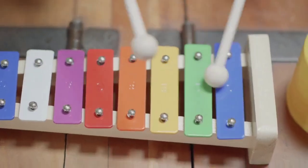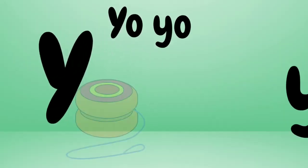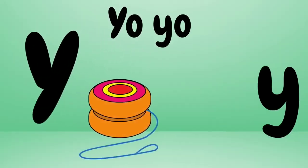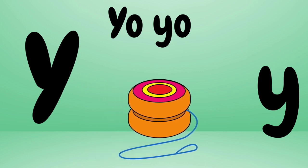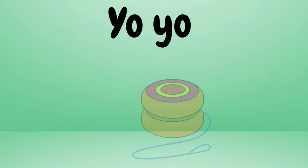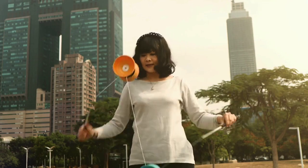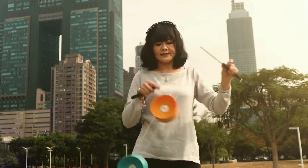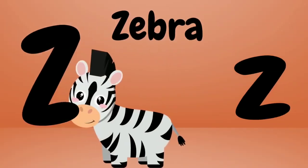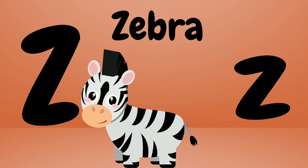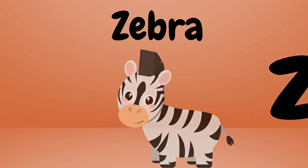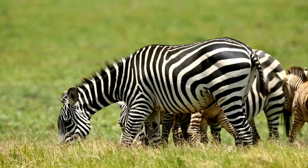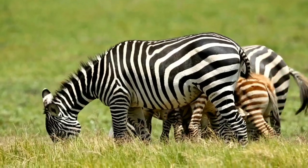Y is for yo-yo. Yo-yo, yo-yo — this is a yo-yo. Z is for Zebra. Zebra, zebra — this is a zebra.